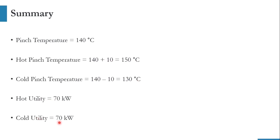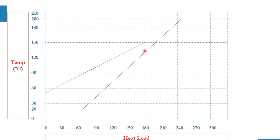Hot utility requirement is 70 kW and cold utility requirement is 70 kW. This matches the graphical method results for delta T minimum of 20°C: hot pinch temperature 150°C and cold pinch temperature 130°C, with utility requirements of 70 kW each. The values from both methods are identical.